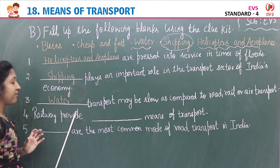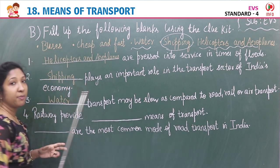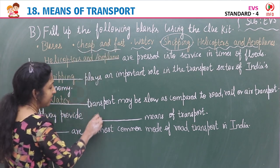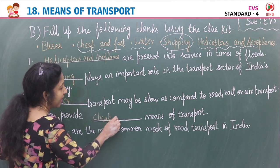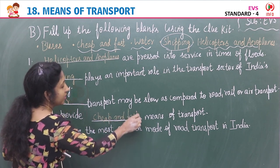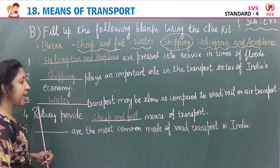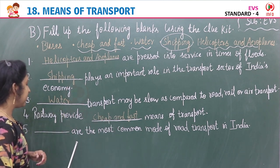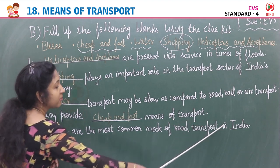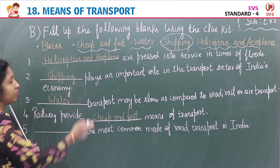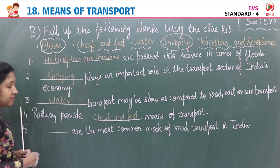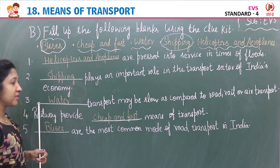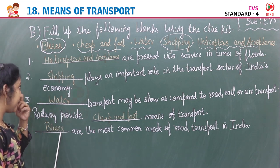Blank four: Railways provide dash means of transport. The answer is cheap and fast — railways provide cheap and fast means of transport. Blank five: Dash are the most common mode of road transport in India. The answer is buses. Buses are the most common mode of road transport in India.